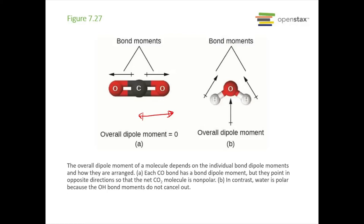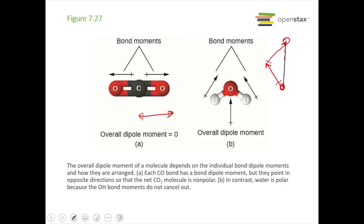For water, you have two bond moments between the oxygen and the hydrogens. Using head-to-tail addition, you draw the first dipole arrow, attach the tail of the second to the head of the first, and the overall dipole moment connects the remaining head and tail. Since there is an overall dipole, water is a polar molecule.